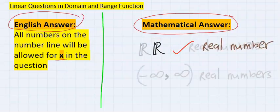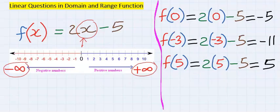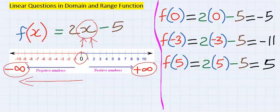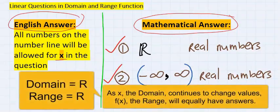Another way to represent this is using interval notation, which equally means x can take values ranging from negative infinity to positive infinity, including zero. This is our answer — both representations are the same, and you only need to write one.